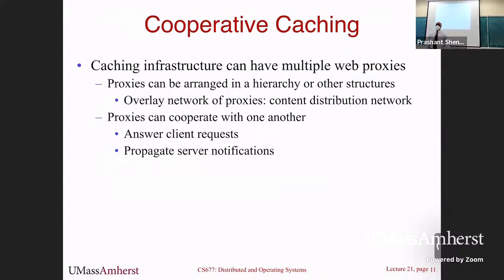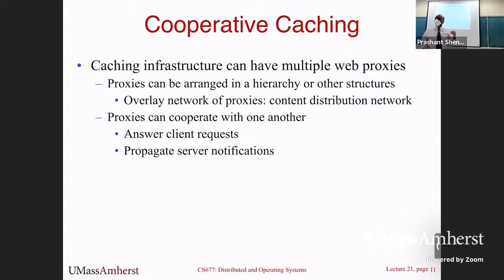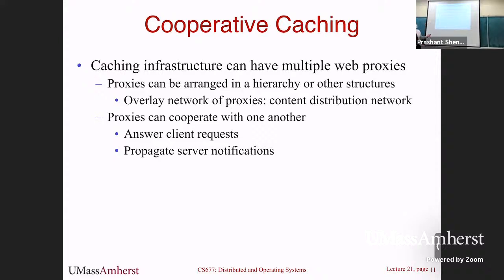The last point on caching before moving to edge computing is cooperative caching. When a proxy gets a request and the content is not cached — a cache miss — you normally go to the server and get the content. But you could also ask a nearby proxy rather than going to the server. With cooperative caching, you have a set of proxies cooperating with each other in addition to interacting with web servers, forming an overlay network of caches that all talk to each other.